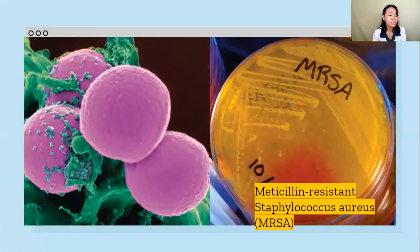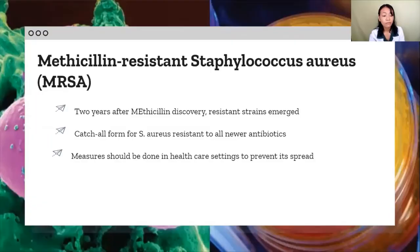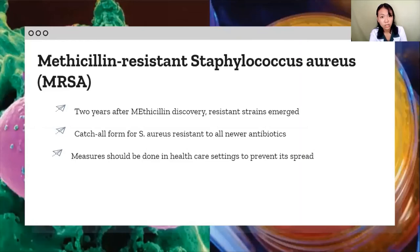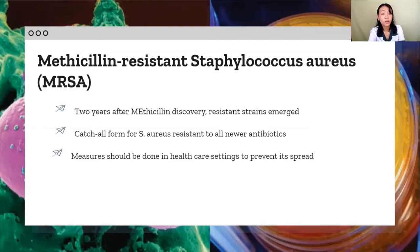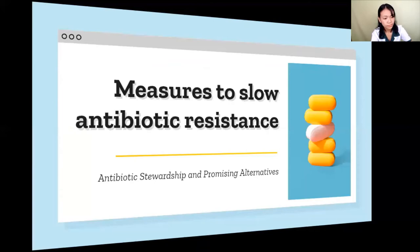The next resistant bacterium to focus on is meticillin-resistant Staphylococcus aureus (MRSA). Meticillin is an antibiotic widely used to treat Staphylococcus aureus infections after its introduction in 1959. However, just two years after its introduction, resistant strains emerged. Today, meticillin in its original form has been rendered all but obsolete, and MRSA has become a catch-all term for Staphylococcus aureus resistant to all newer antibiotics used to treat infection. Basic hygiene measures — such as hand-washing and avoiding moving patients around too often — can be enough to prevent the spread of MRSA in healthcare settings.